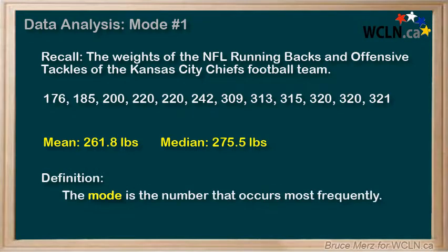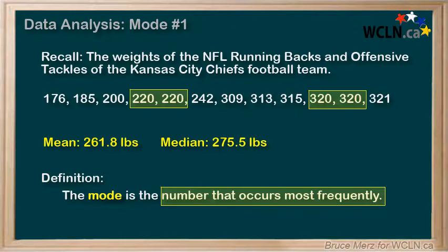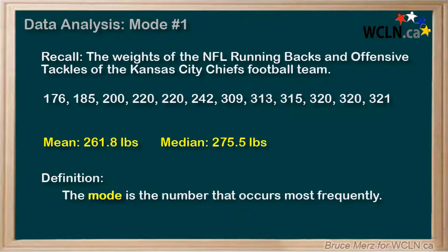The mode is the number that occurs most frequently. For instance, in the data set above, if we look for a weight that occurs the most often, we actually find two such possibilities. Every single weight occurs only once, except for the weight of 220 pounds, which occurs twice, and the weight of 320 pounds, which also occurs twice. And so there's actually a tie for the number that occurs most frequently: 220 and 320. And so we'd say there are two modes for this data, 220 pounds and also 320 pounds.